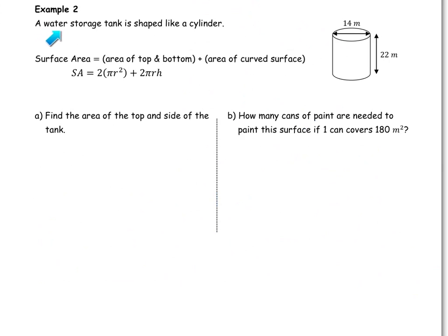Let's take a look at example two. A water storage tank is shaped like a cylinder. We have this cylinder over here, and we are going to find the area of the top and side of the tank. In other words, we're going to find the surface area for this cylinder. So we have the formula up here. The surface area for a cylinder is actually the area of the top and the bottom. Now, you'll notice there's a top and a bottom, so that's why there's a two. And they're circles, so we have the area of the circle and the area of the curved surface. So that's the part kind of around here, and that part can be expressed as 2πrh.